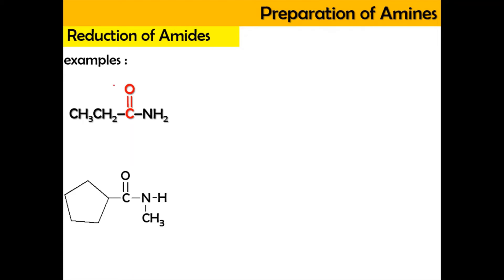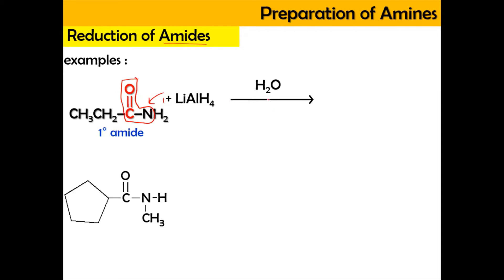Here is a primary amide example, because the nitrogen is attached with one alkyl group, and this is the amide group. When it reacts with the reducing agent lithium aluminium hydride and H2O (water), the C=O becomes CH2, producing a primary amine.